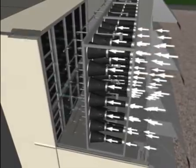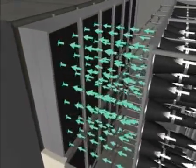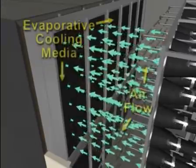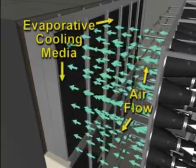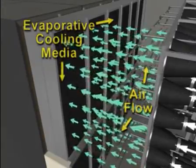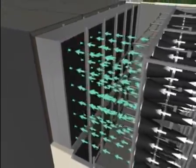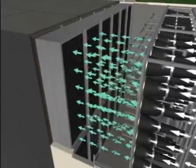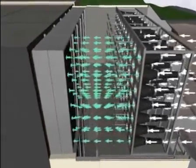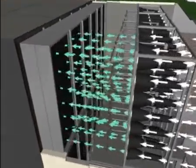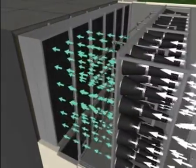From the filters, the air goes to an evaporative cooling media section. The evaporative cooler utilizes water to cool the incoming air. The cooler air results in a greater density of mass flow, thus maximizing the gas turbine's power output during hot days of operation.